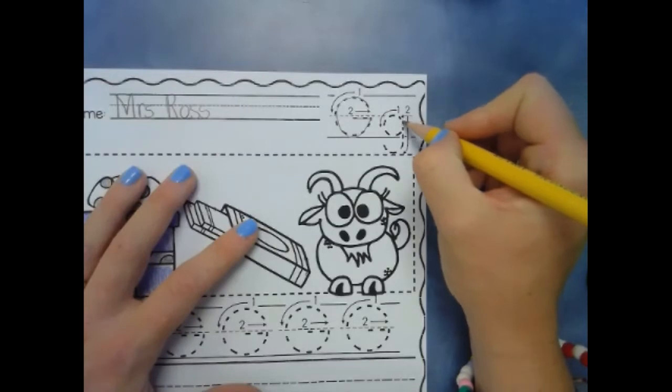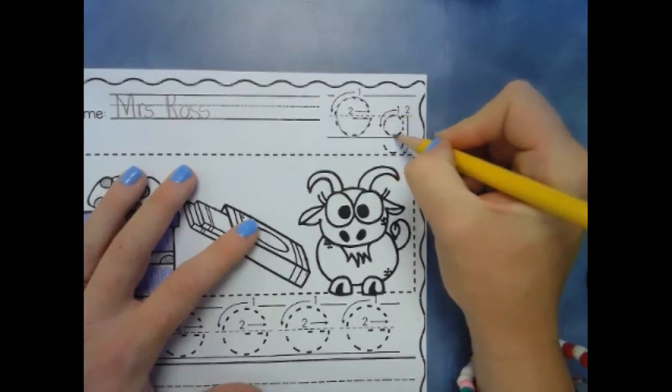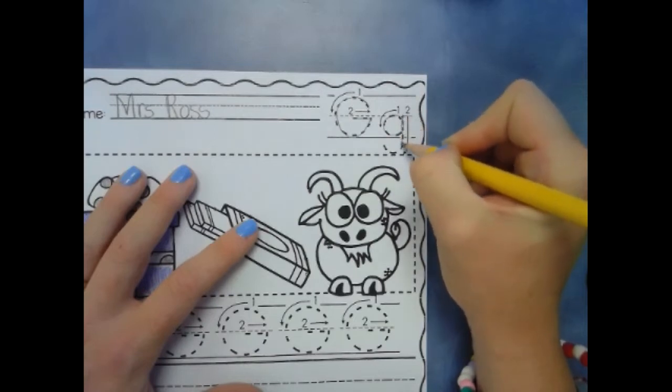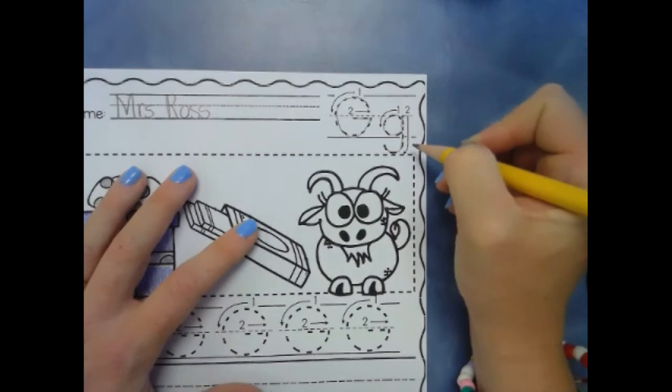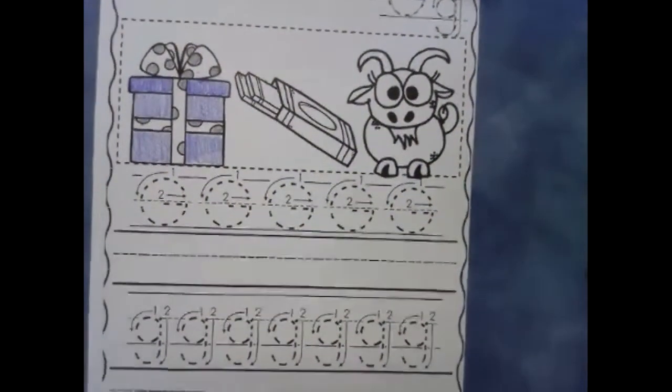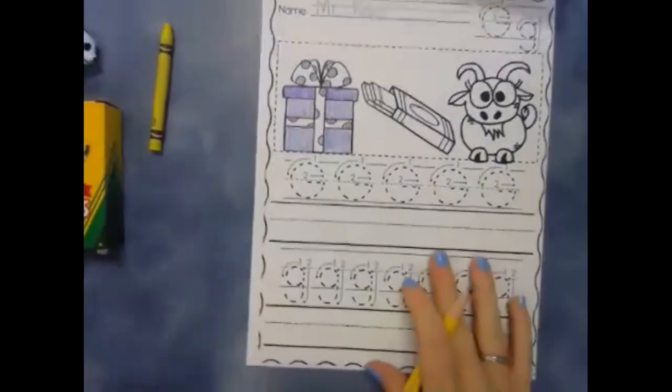Now we are going to be doing our lowercase g. Our lowercase g starts over on the side right here, right where the line would be. You are going to make a complete circle. Go up and down. All right. So let's go to our writing. I'm going to zoom out just a little bit so you're able to see more.